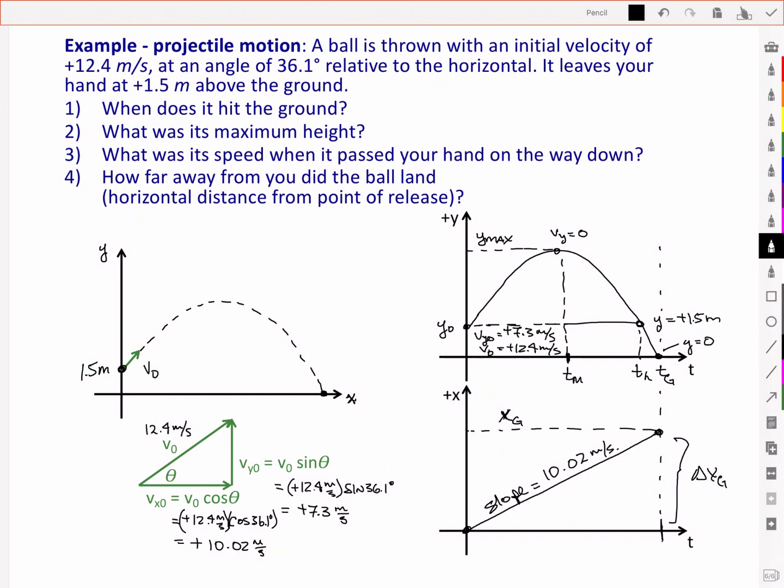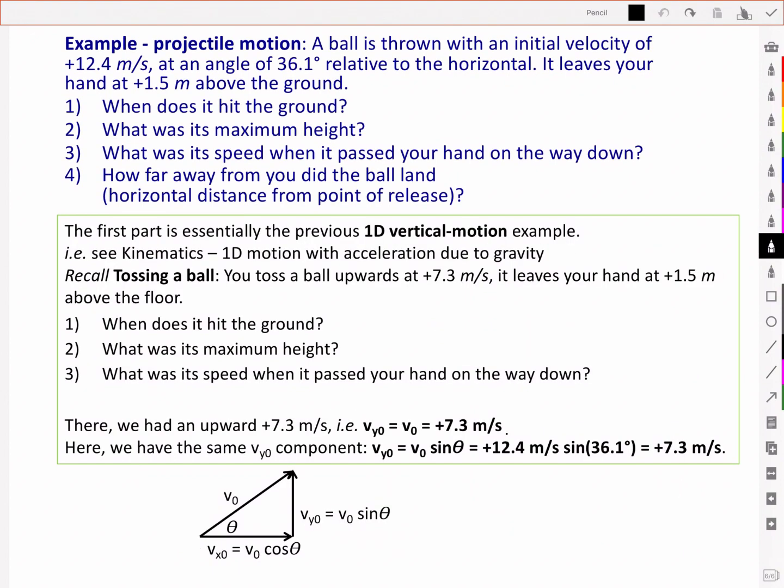But this should all be looking pretty familiar because we've actually solved the first half of this problem before. We saw this problem before where you toss the ball upwards at a positive 7.3 meters per second leaving your hand at positive 1.5 meters and we were asked to find when it hits the ground, its maximum height, and its speed when it passed your hand on the way down. There we had an upward velocity of 7.3 meters per second. And now we have the same but as a vy component. So the component of our velocity that is vertical is 7.3 meters per second just like we had there. But we now have an added constant x component to our velocity.